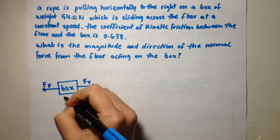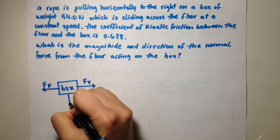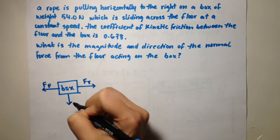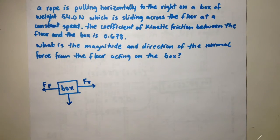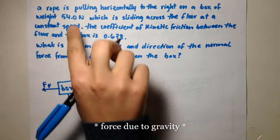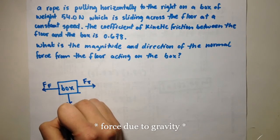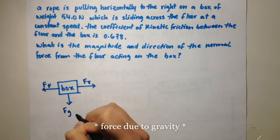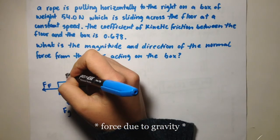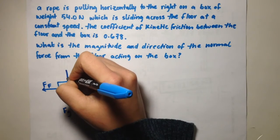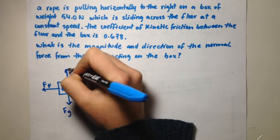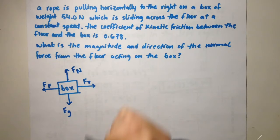There is the force of gravity acting on the box, which is the weight of the box — 54 N — so force of gravity. And then the normal force, which always opposes the force of gravity, so normal force. This is the free body diagram.